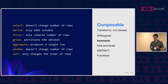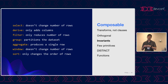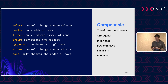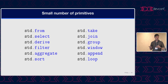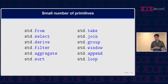That orthogonality gives us a number of invariants: SELECT never changes the number of rows; DERIVE only adds columns; FILTER only reduces rows; AGGREGATE always produces a single row — or multiple rows when it's part of a GROUP BY. Because of that, we have a very small set of primitive transforms — only 12. This makes the language easy to learn and retain, so you don't always have to go back to the docs to figure out the syntax.